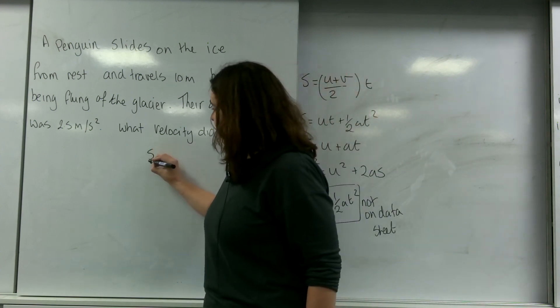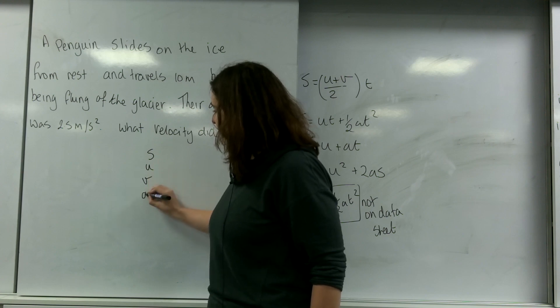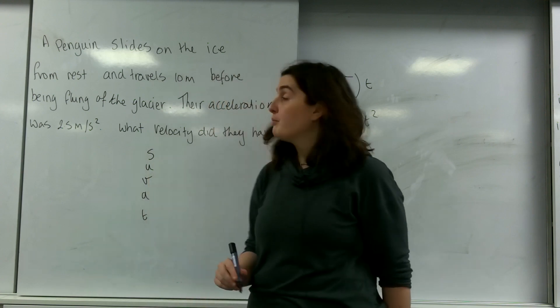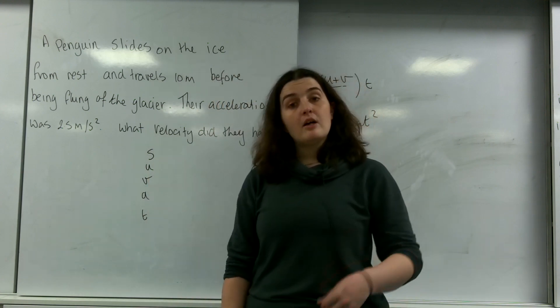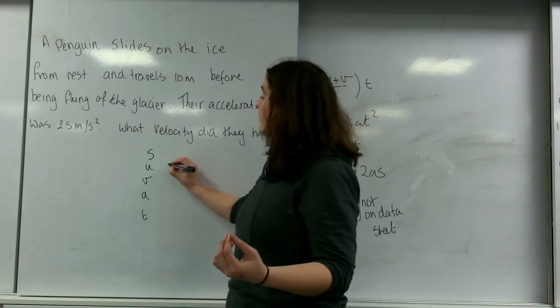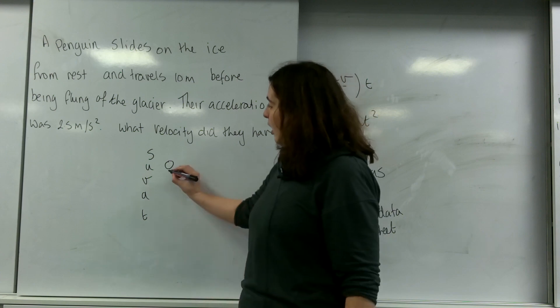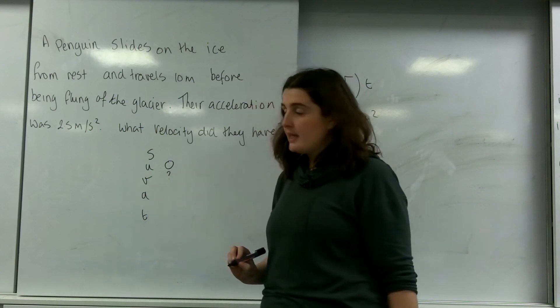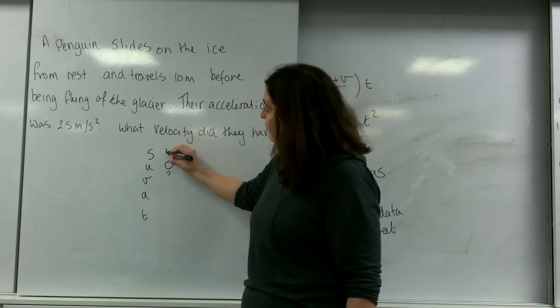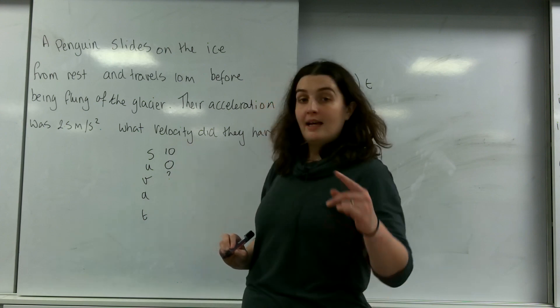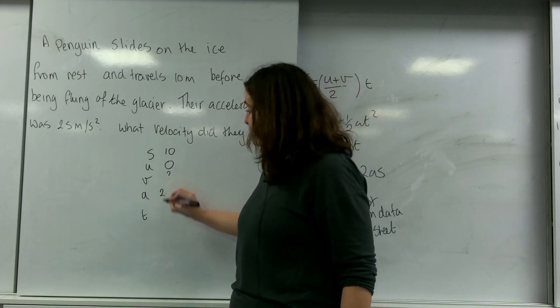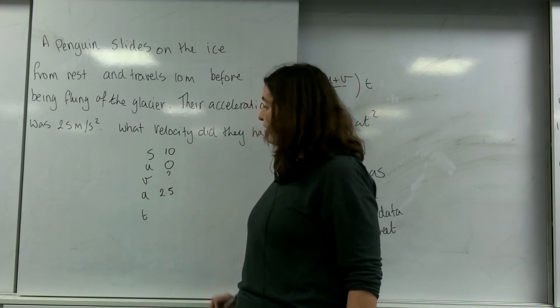So, again, I'm going to write SUVAT. I'm going to fill in the information I know. So I know he started from rest, so that would be 0. The initial velocity would be 0. I don't know my final velocity. I know he travelled 10 metres, and I know the acceleration was 2.5.